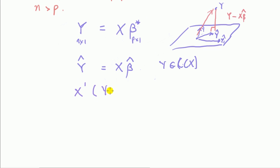X transpose Y minus X beta hat equals zero. Actually, I want to say a bit more about why it's X transpose as opposed to X.